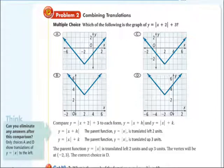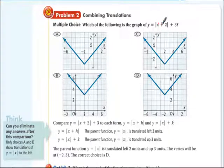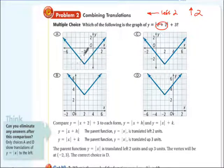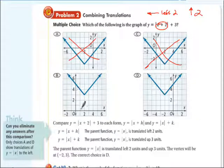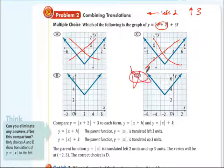Let's look at combining transformations. Which of the following graphs is y equals the absolute value of x plus 2, plus 3? Before looking at the choices: a plus on the inside means it moves left 2, and the plus 3 outside means it moves up 3. One option goes down, so eliminate that. One goes right 2 and up 3 — no good. Going left 2 and up 3, our answer is D.